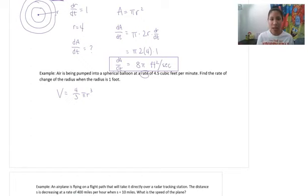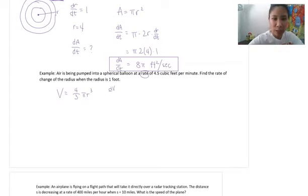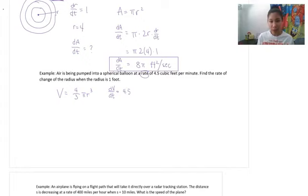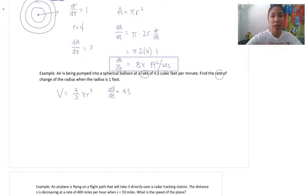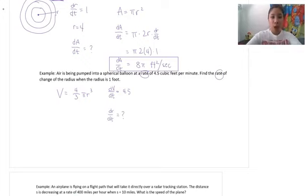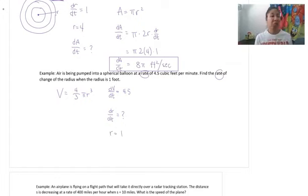The rate is 4.5 cubic feet per minute, which means that's the rate of our volume, so dV/dt equals 4.5. The problem says find the rate of change of the radius, so we're looking for dr/dt. When the radius is one foot, r equals 1.